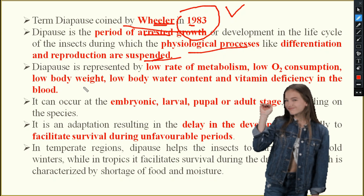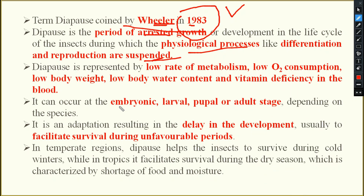Diapause may occur in any stage — it may be the embryonic stage, larval stage, pupal stage, or adult stage, depending on the species and their requirement. It is an adaptation resulting in the delay in development, usually to facilitate survival during the unfavorable period.